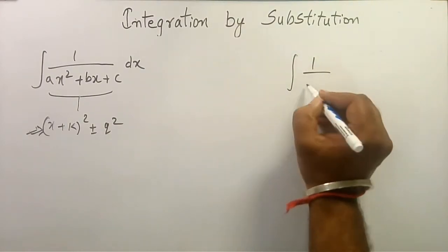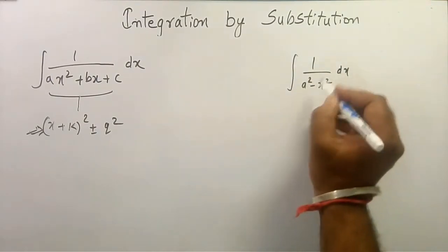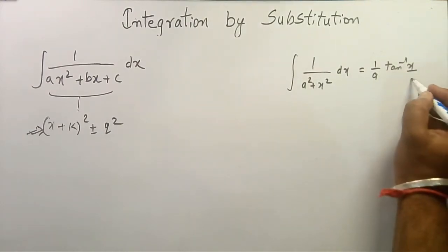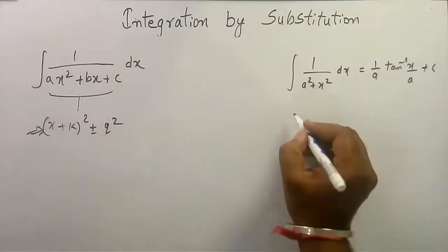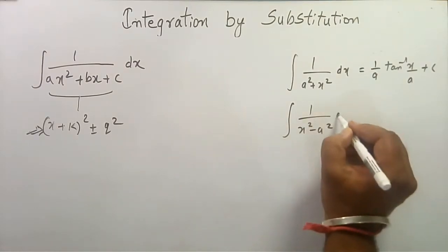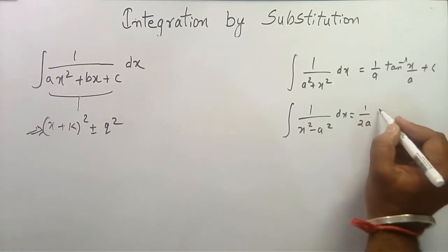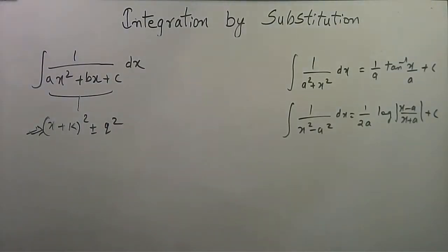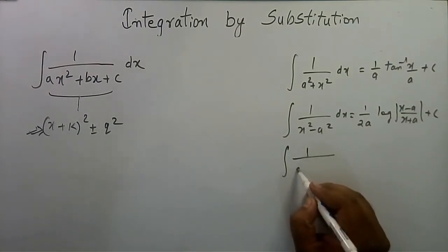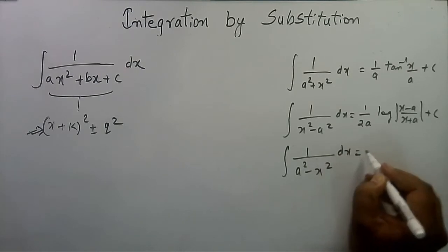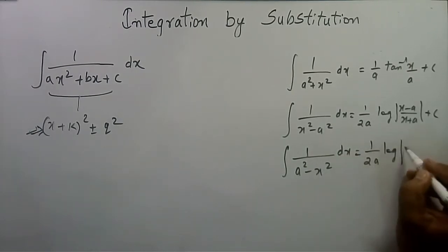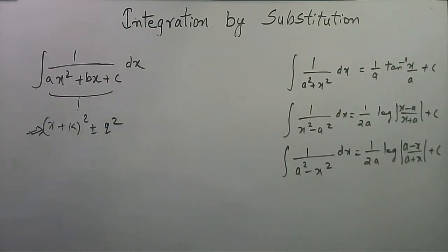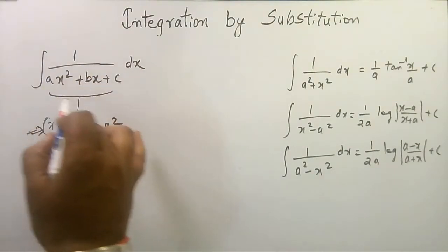After doing this, we can use either of these three formulas. First, ∫1/(a²- x²)dx = (1/a)tan⁻¹(x/a) + c. Second, ∫1/(x² - a²)dx = (1/2a)log|x - a / x + a| + c. Third, ∫1/(a² - x²)dx = (1/2a)log|(a - x)/(a + x)| + c.